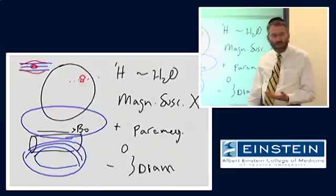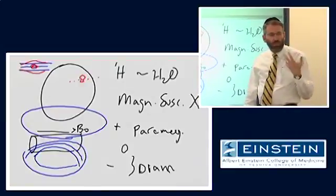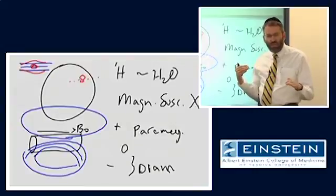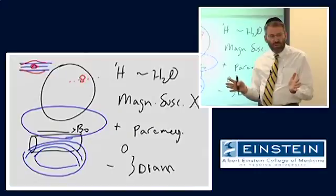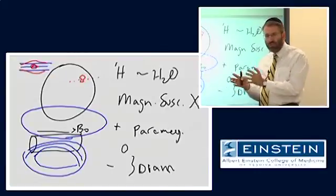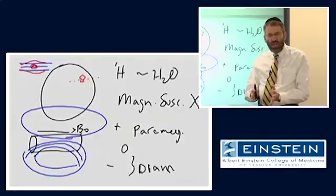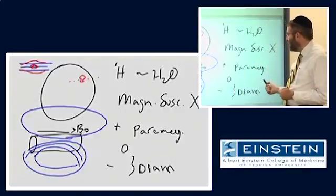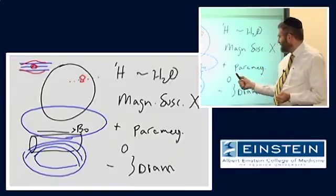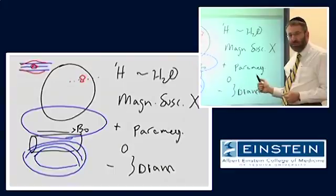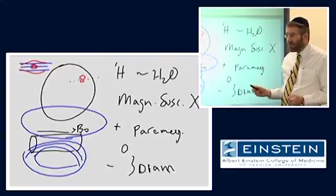It causes a large amount of dephasing, as well as causing spins to precess at different frequencies. You get signal loss and distortion in the image. What we're going to talk about today is magnetic susceptibility due to paramagnetic substances, like blood products and like contrast agents.